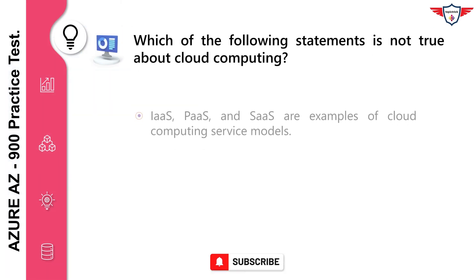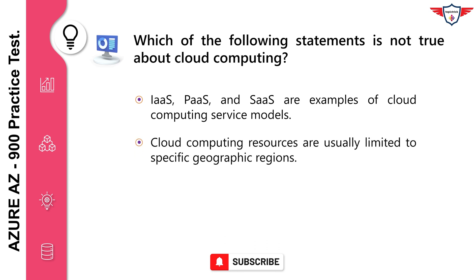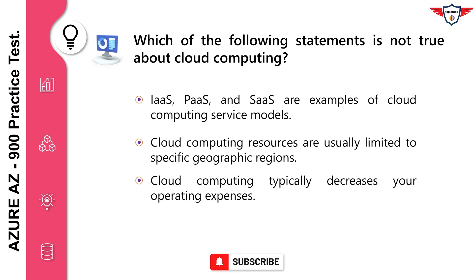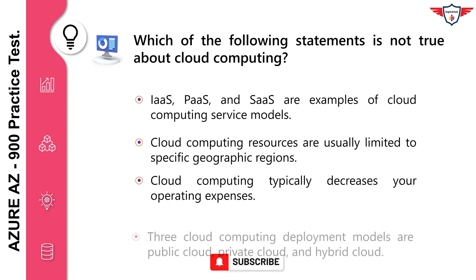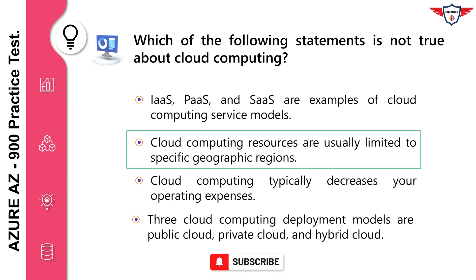Which of the following statements is not true about cloud computing? IaaS, PaaS, and SaaS are examples of cloud computing service models. Cloud computing resources are usually limited to specific geographic regions. Cloud computing typically decreases your operating expenses. Three cloud computing deployment models are public cloud, private cloud, and hybrid cloud. The correct answer is: cloud computing resources are usually limited to specific geographic regions. Most cloud computing resources can be distributed to global data centers.